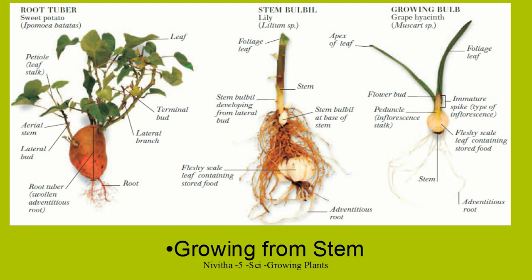Likewise, from a bulb also you can see here — from this stem the foliage leaf is coming. Here is a stem coming from this bottom portion. This is the fleshy scale leaf containing stored food. And from these buds it grows — the shoots grow. This is a growing bulb like onion and garlic.